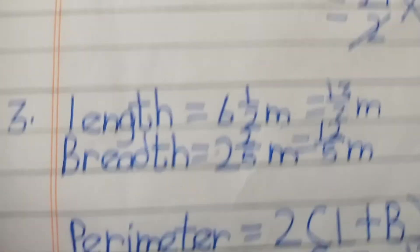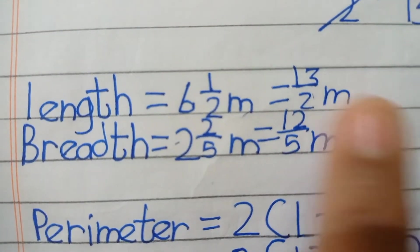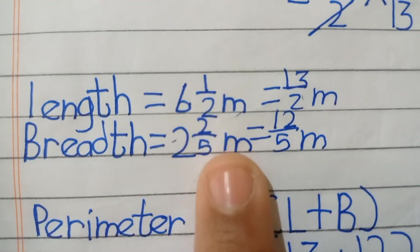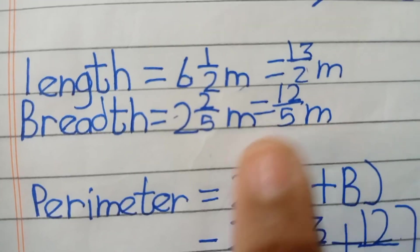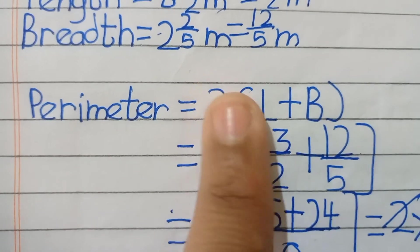First of all, length is 6 whole 1 over 2 meter, jo ki ban jayegi 13 over 2 meter. Breadth is 2 whole 2 over 5 meter, yani 12 over 5 meter. Perimeter aayega 2 whole length into breadth. 2 into length into breadth.